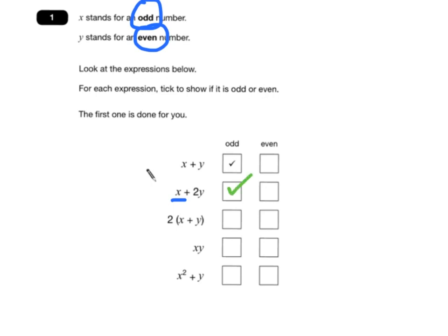Now this next one, 2 brackets x plus y, we can multiply that out. Remember, we multiply everything inside by 2, so we get 2x plus 2y.